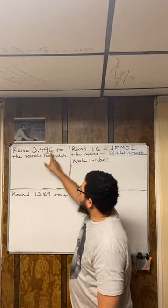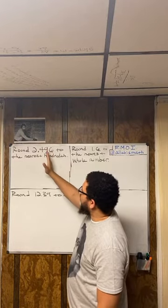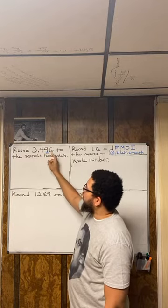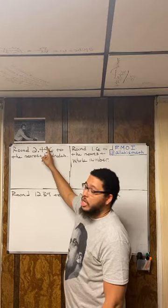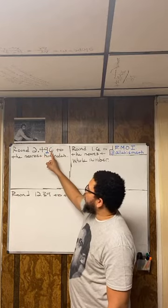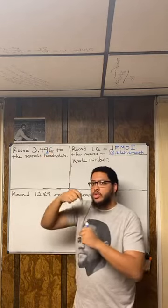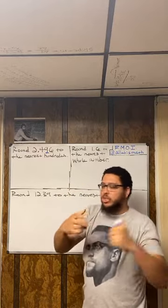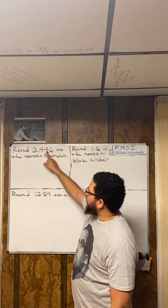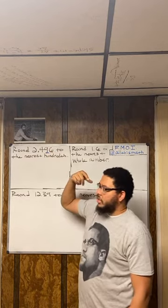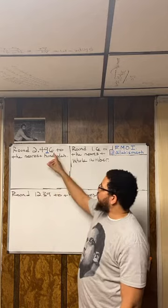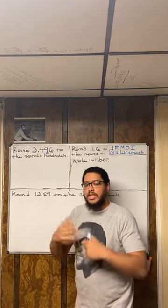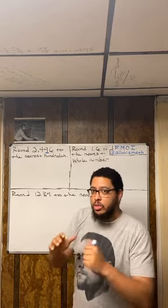What does that mean? If the number to the right of the place you're rounding is five or above, that digit gets a shove — it goes up. If it's four or below, you let it go, meaning you leave it alone. Don't let your brain trick you into thinking four or below means you subtract — you just leave it as is.